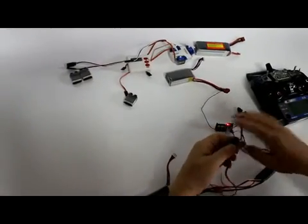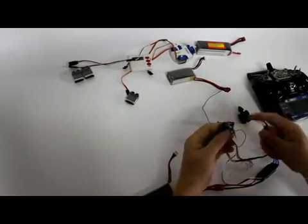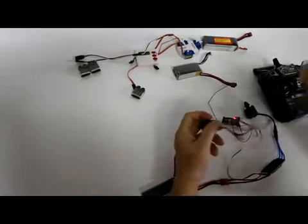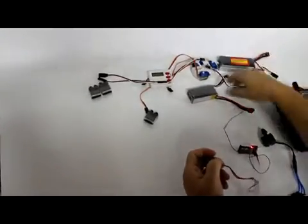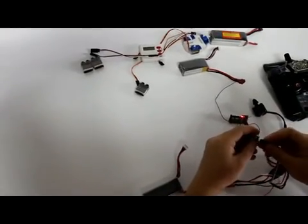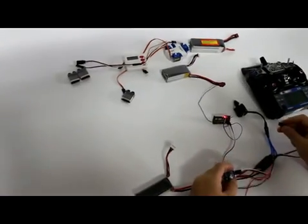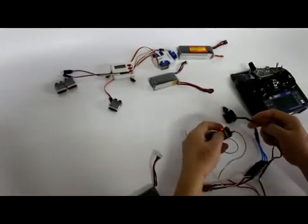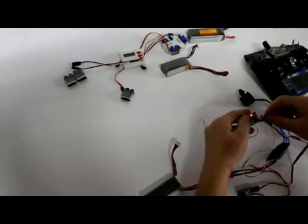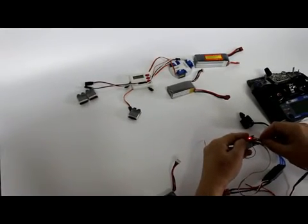You can also use it. Connect the white cable on one side, here another, to your receiver, any channel on your receiver. Here I set the channel, channel 5, channel 6.